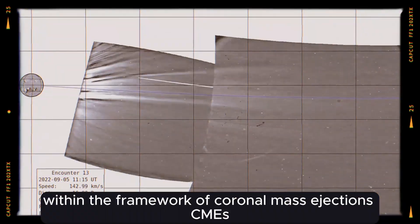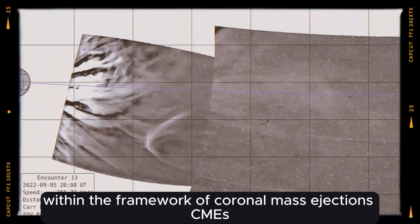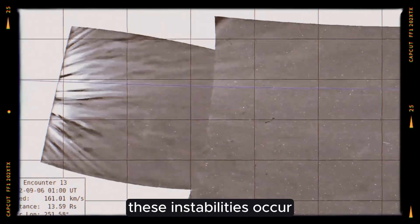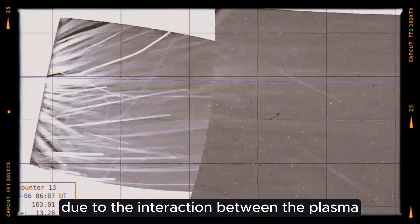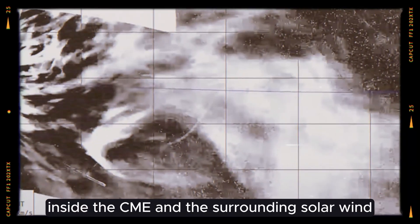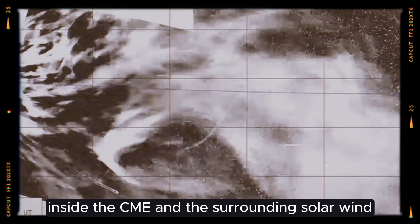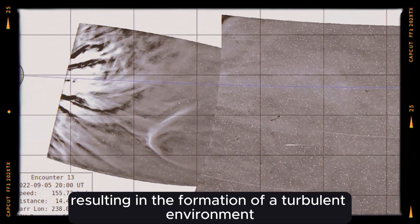when distinct strata of water exhibit varying velocities. Within the framework of coronal mass ejections, CMEs, these instabilities occur due to the interaction between the plasma inside the CME and the surrounding solar wind, resulting in the formation of a turbulent environment.